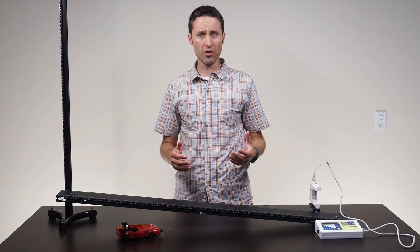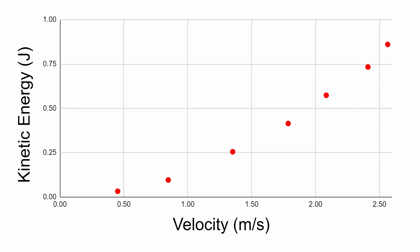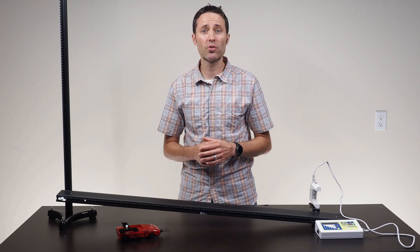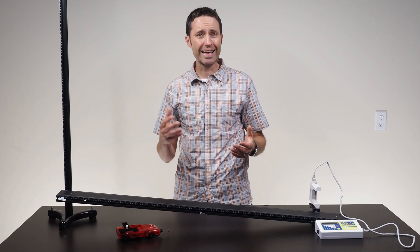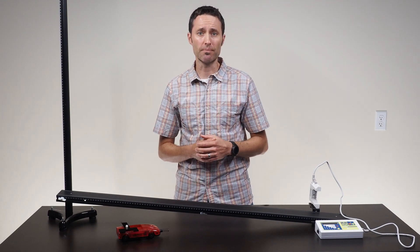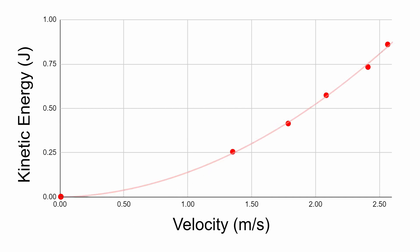Sometimes when students look at the original kinetic energy and velocity graph, the trend will appear linear. This will typically happen if the students do not collect a wide range of values. Upon closer inspection, there is usually a slight upward curve to the data, but students are not convinced it is parabolic. When looking at graphical trends, I tell students to look at both the visual pattern of the data and to think about the expected value of the y-intercept. All students will say that they expect the car's kinetic energy should be zero when its velocity is zero, meaning their graph should have a zero y-intercept. If a data point is placed at the origin, students will see that the graph is parabolic and will need to be linearized.